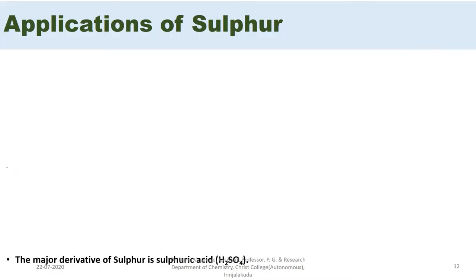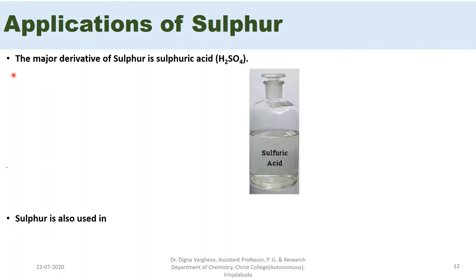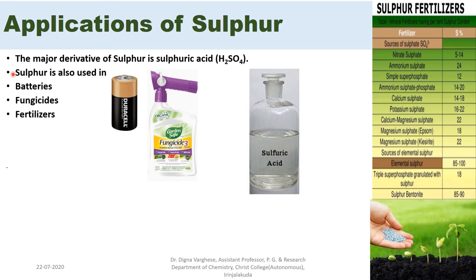The major derivative of sulphur is sulphuric acid. Sulphur is also used in batteries, fungicides, and fertilizers. Important sulphur-containing fertilizers include nitrate sulphate, ammonium sulphate, simple superphosphate, ammonium sulphate phosphate, calcium sulphate, potassium sulphate, calcium magnesium sulphate, and sulphur bentonite.